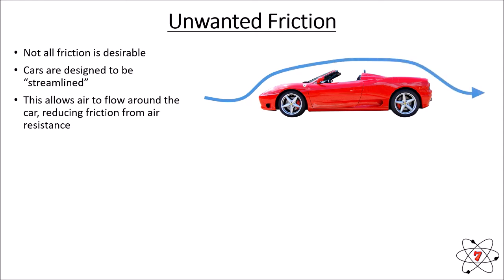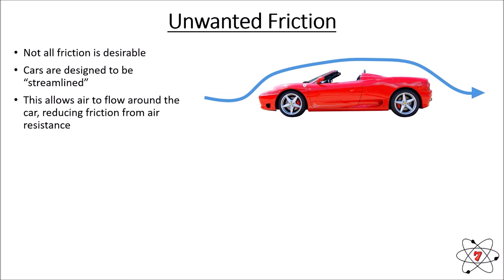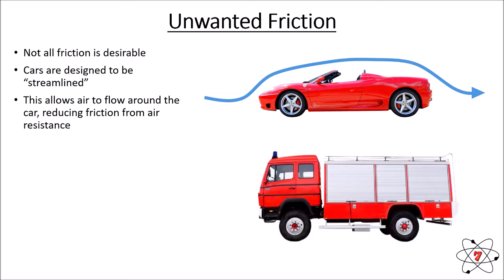We make our car streamlined so that air flowing around it has as little friction as possible. A lorry, for example, is less streamlined because it's less important that it goes quickly, meaning there is greater friction between the lorry and the air than there would be between a car and the air.